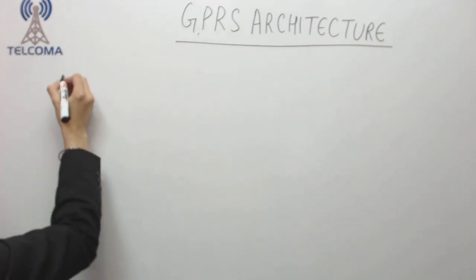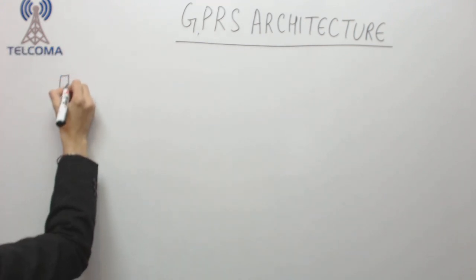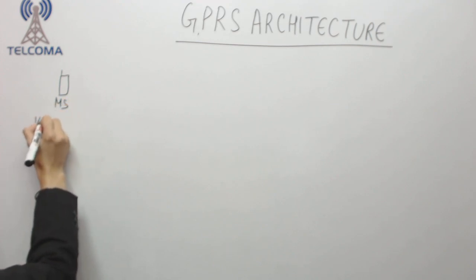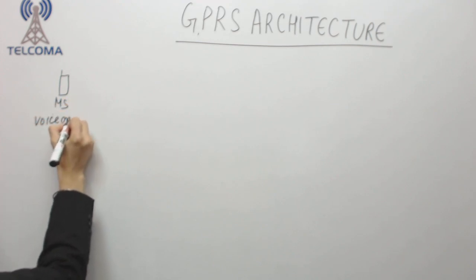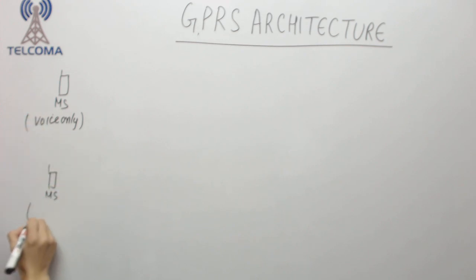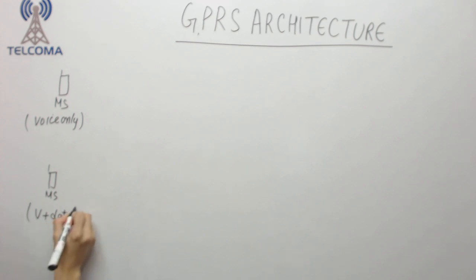Hello and welcome to the class on GPRS. Today we are going to discuss GPRS architecture. We have two mobile stations: the first supports voice only, and the second supports voice plus data, meaning it is an upgraded or new phone.